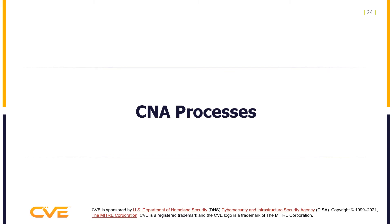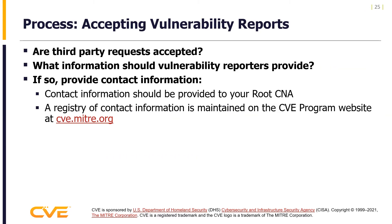Next, CNA processes. How are you going to accept vulnerability requests? What information should vulnerability reporters provide? Will your organization accept third-party reports? These are details the CNA needs to consider when developing their processes. To assist vulnerability reporters, your root CNA must have your contact information. The CVE program maintains a registry of contact information for CNAs so reporters can contact you, located at cve.mitre.org — go to the CNA tab and select Participating CNAs.